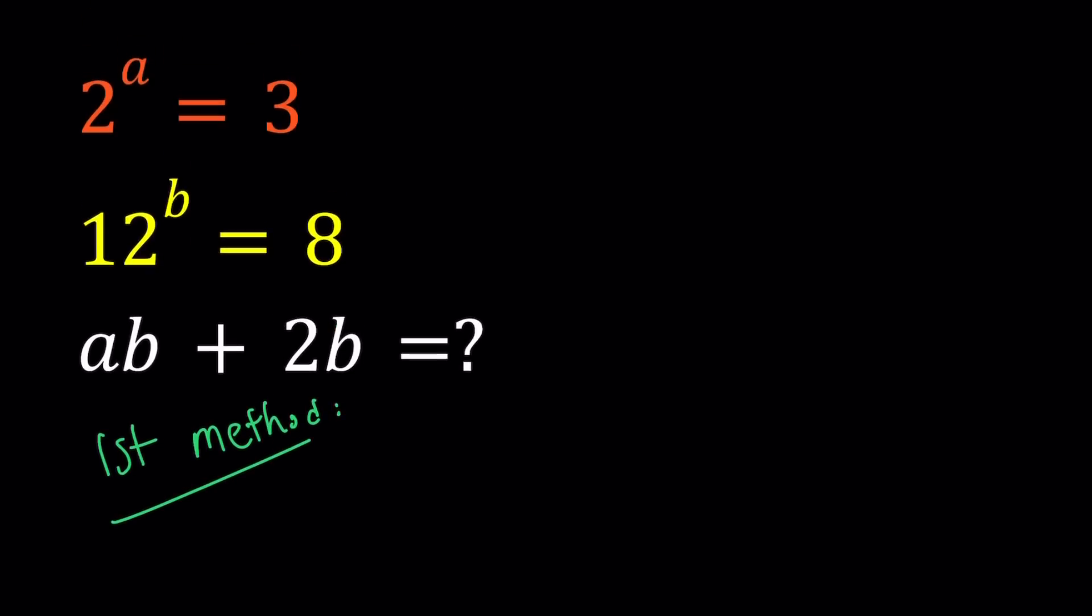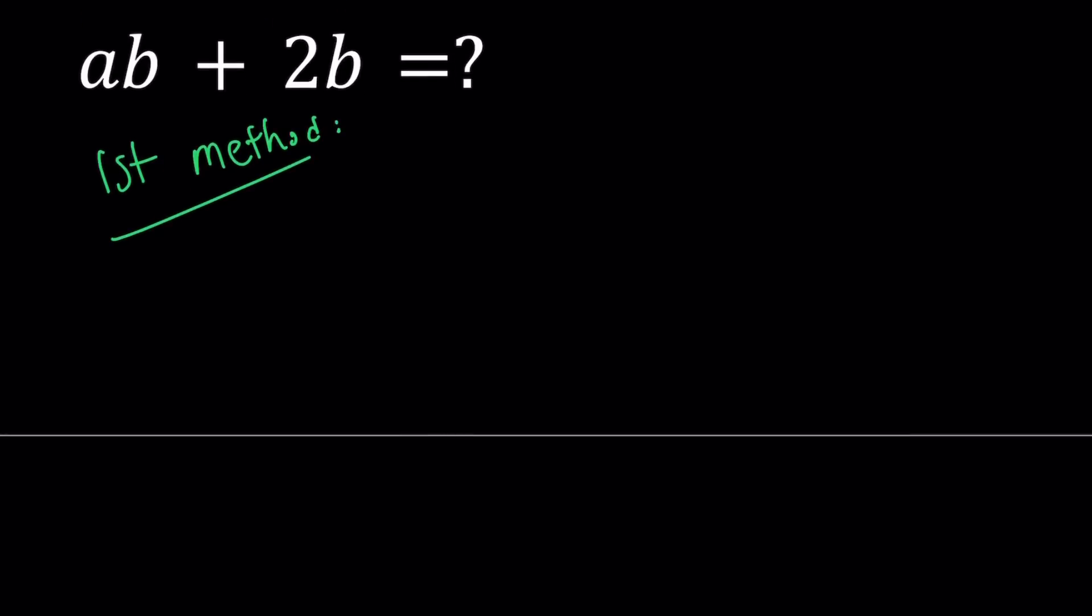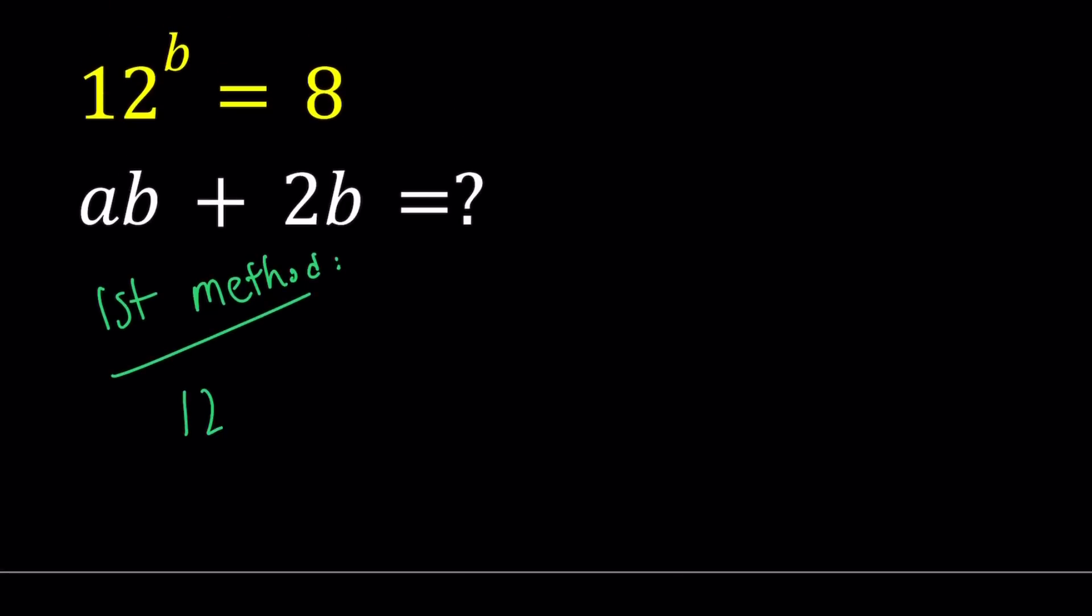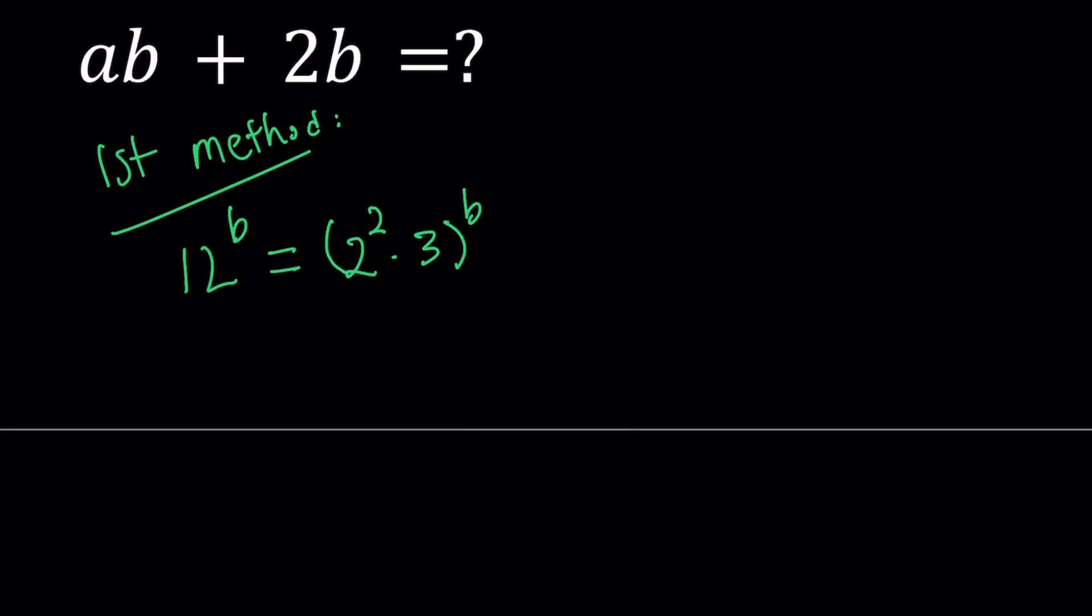So for my first method, I'm going to start working with 12 to the power b. Write the 12 as 2 to the second power times 3 and raise it to the power b. And we can use the properties of exponents here and write it this way.